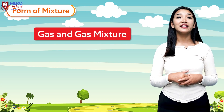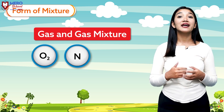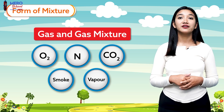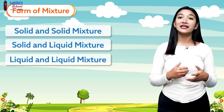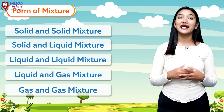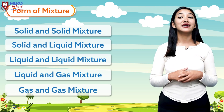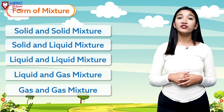Let's talk about gas and gas mixtures. Oxygen, nitrogen, carbon dioxide, smoke — these are examples. Solid and solid mixture, solid and liquid mixture, liquid and liquid mixture, liquid and gas mixture, gas and gas mixture — all these are different forms of mixture classified on the basis of state of matter. How many types of mixtures are there? Five.